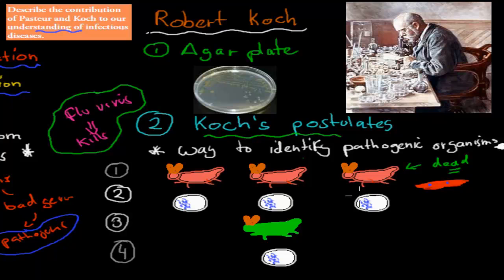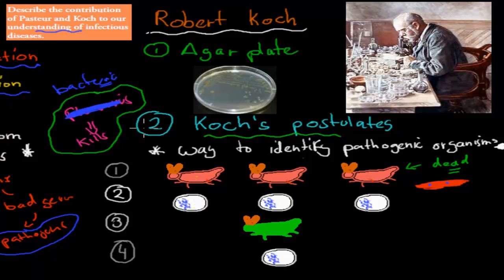Step two: we grab the actual bacteria and put it on an agar plate - we isolate it from the animal and culture it. That's why Koch came up with the agar plate, because he actually needed it to prove his postulates. The agar plate provides nutrition for the bacteria to grow. We not only have to find the bacteria in each of their bodies, we also need to be able to grow it on an agar plate. If step one and step two are both successful, we proceed to step three.